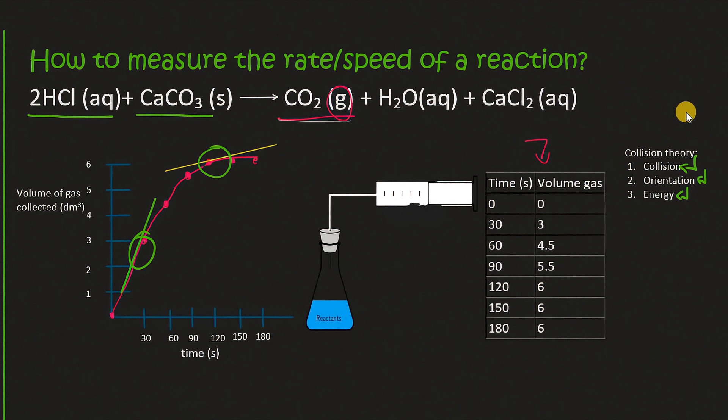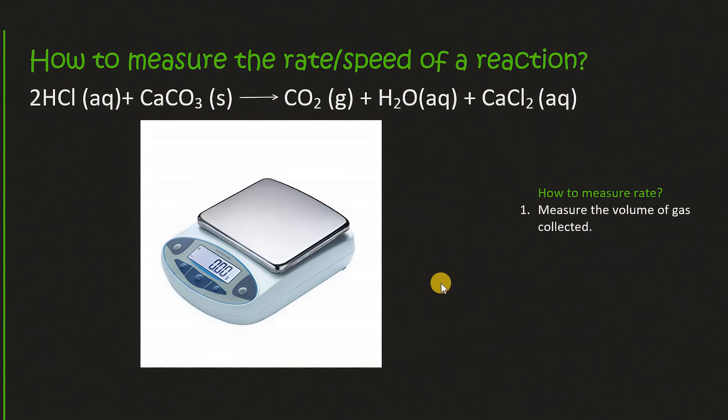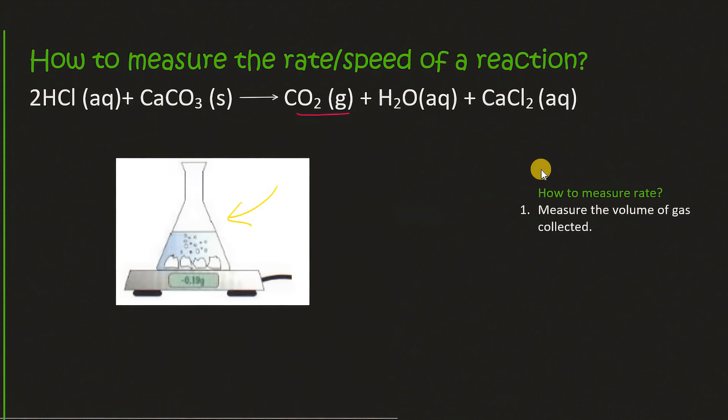Now another way that we can measure the rate of a reaction is by using the following apparatus. We can use a laboratory scale. Because we have a gas that is being released it means that the mass of your flask that has your reaction is going to decrease.